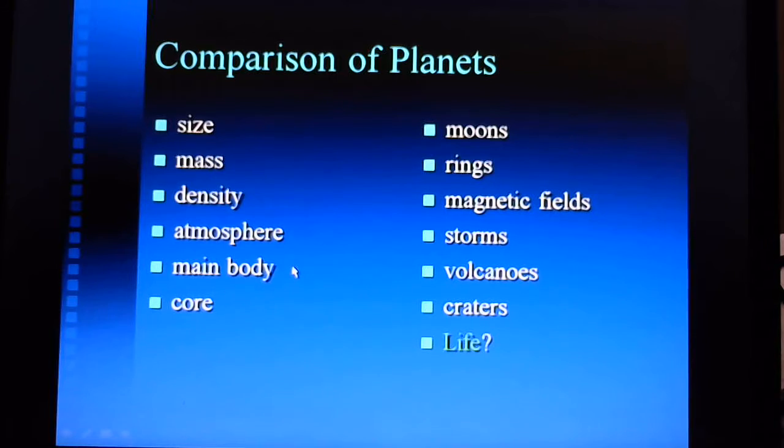When we talk about the main bodies of the planets, the main bodies of the gas giants are mainly atmosphere, mainly the gas, and the main body of the terrestrial planets are mainly the rocky parts.